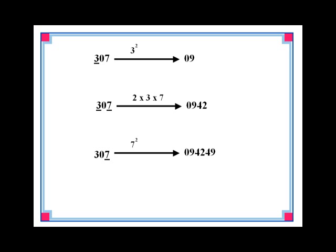In the last step we square the rightmost digit. The rightmost digit in 307 is seven and the square of seven is 49. So write down 49 as shown. We now have the final answer. The square of 307 is 94,249.